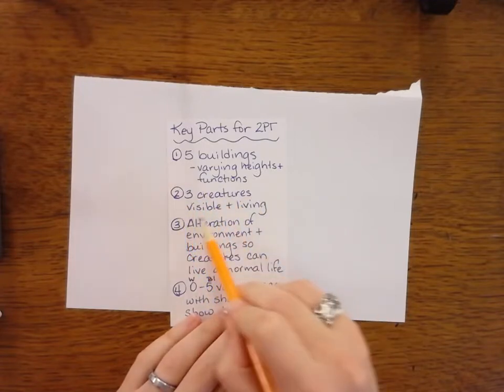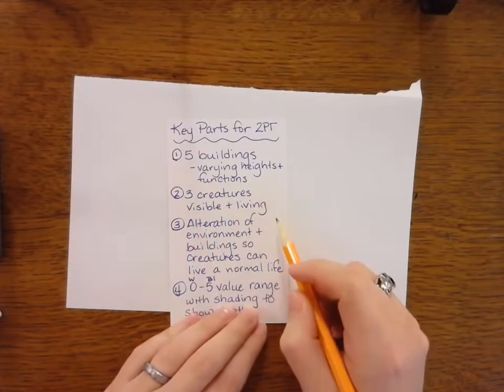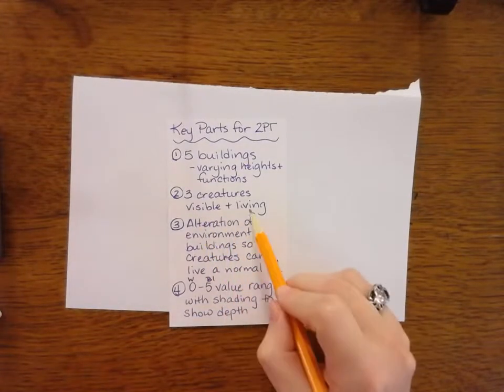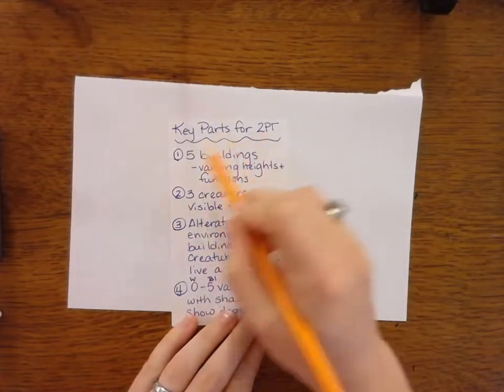Number two, I need to see three of these different creatures. They can be human-like or they can just be creatures that you've created, and they need to be visible and living within these five buildings and the environment around them.